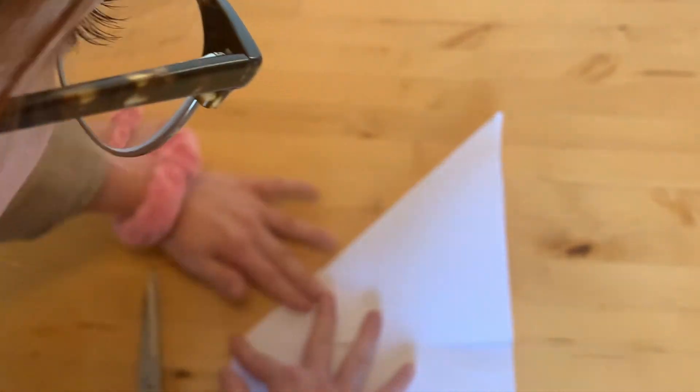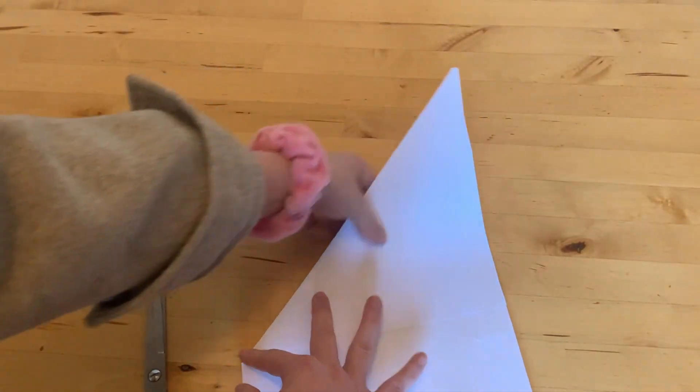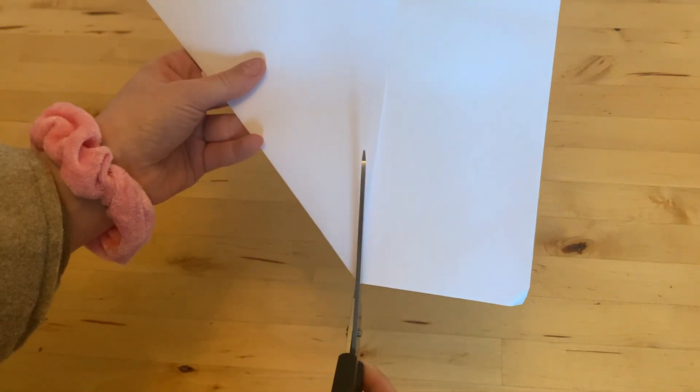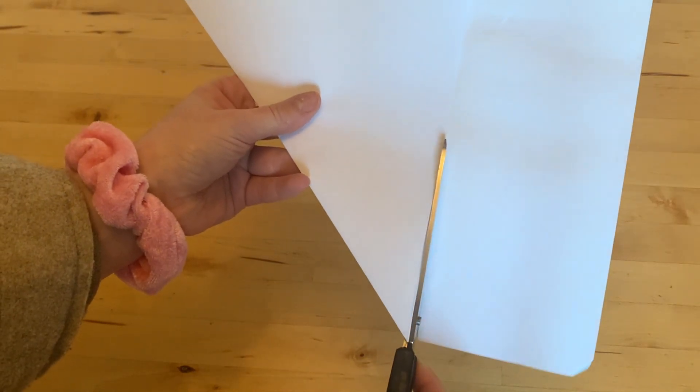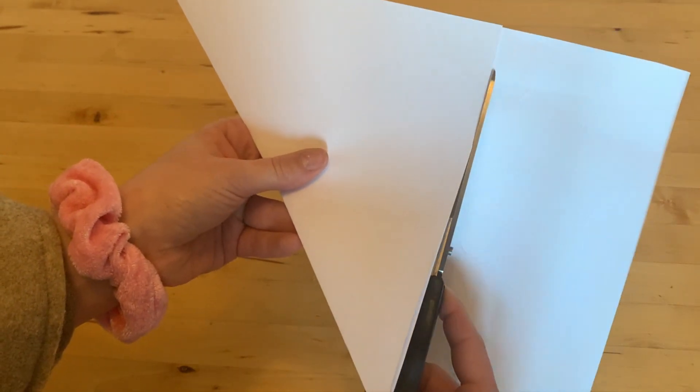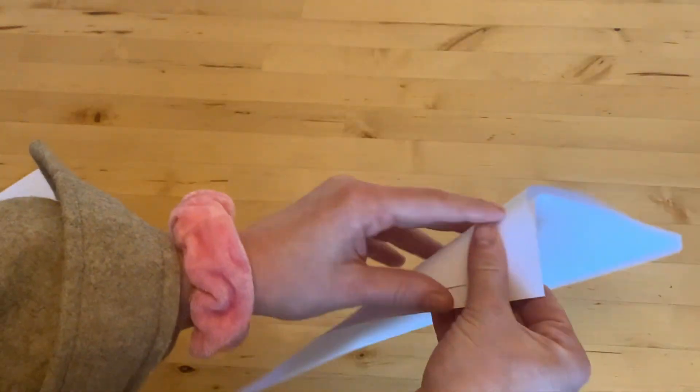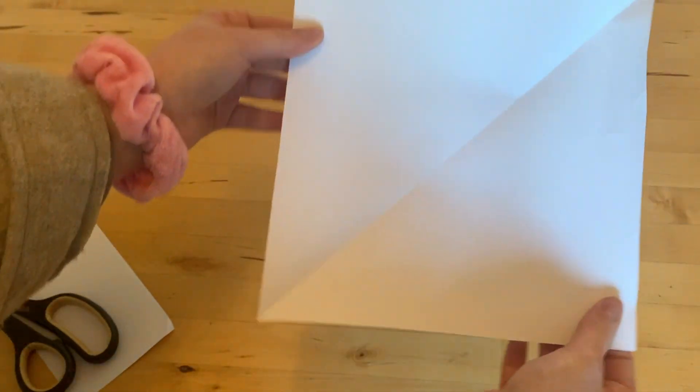Look carefully along here to make sure it's all lined up and then we're going to cut off this extra part here. Then when I open my paper up it's a square.